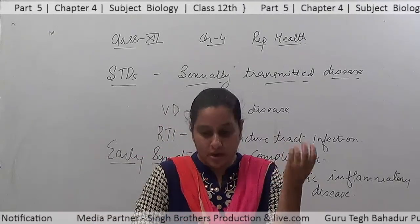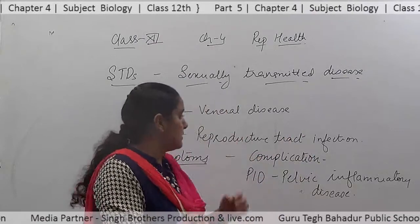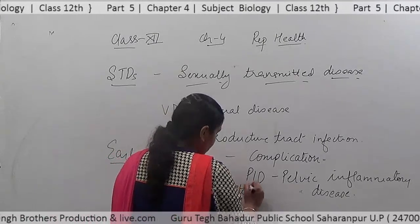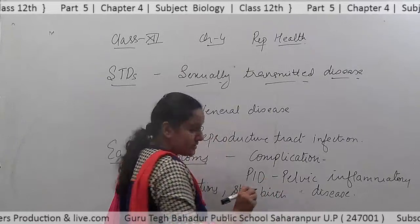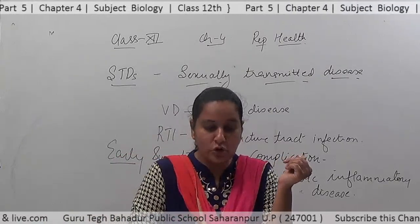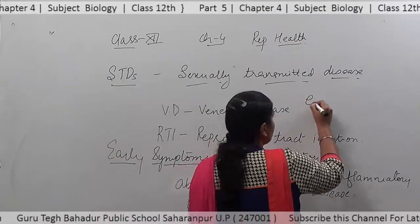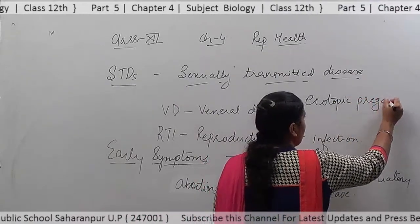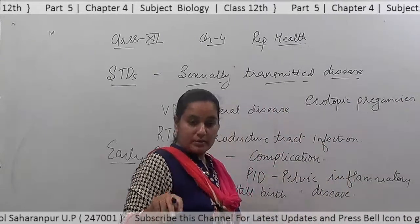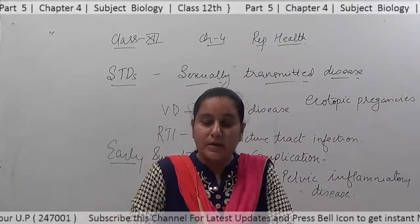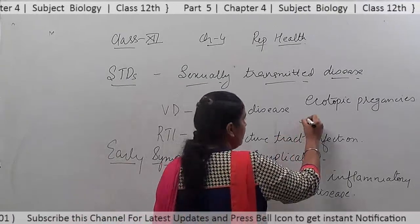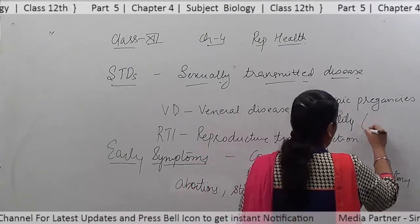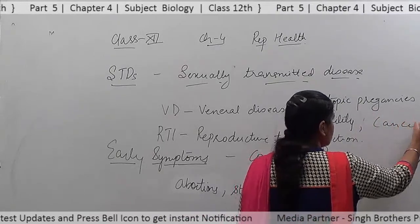Chronic STDs may also cause abortion, stillbirths — where the baby is born but not alive — and ectopic pregnancies, which means pregnancy occurring in the fallopian tube rather than the uterus. They may also lead to infertility, meaning the couple is unable to reproduce, and may even cause cancer in the genital or reproductive tract regions.